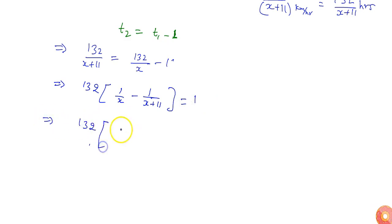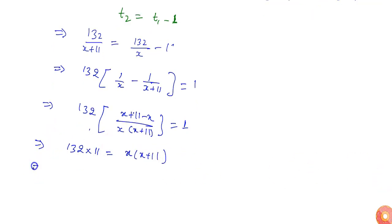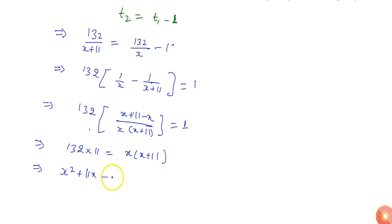Solving further: 132 times (x plus 11 minus x) divided by x times (x plus 11) equals 1. This simplifies to 132 times 11 equals x squared plus 11x, giving us x squared plus 11x minus 1452 equals 0.